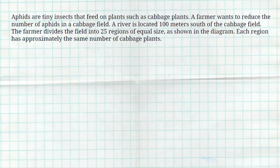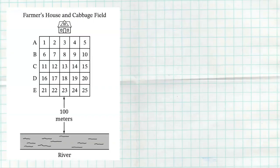All right, this question dealt with collecting data. So aphids are tiny insects that feed on plants such as cabbage plants. A farmer wants to reduce the number of aphids in the cabbage field. A river is located 100 meters south of the cabbage field, and the farmer divides the field into 25 regions of equal size, as shown in the diagram.